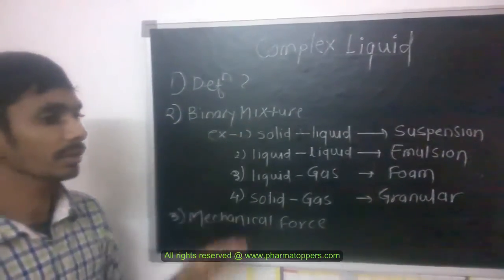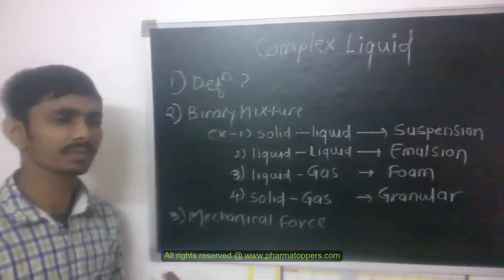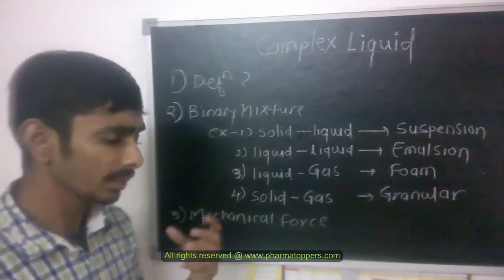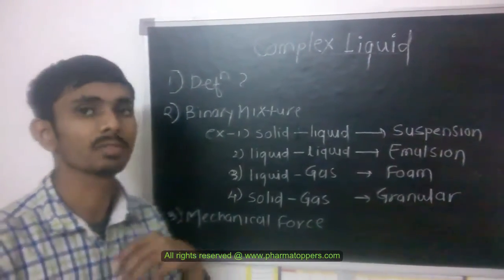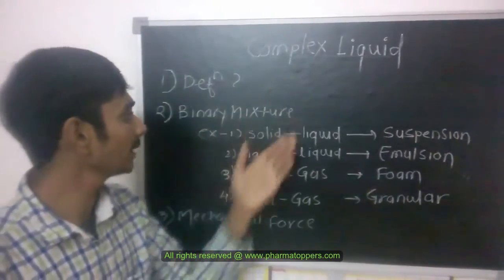In this binary mixture, what is meant by binary mixture? Binary mixture simply means a mixture of two components: component A and component B. It can be a mixture that forms a new component, called a binary mixture.